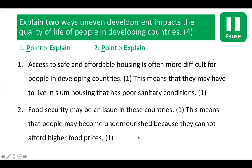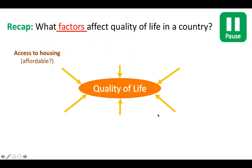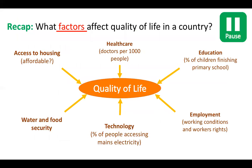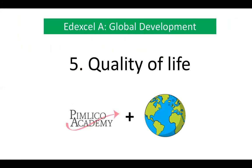For the second point, you could mention that food security may also be an issue in developing countries. This means that people may become undernourished because they cannot afford higher food prices. You could use any of the main factors to explain why people's quality of life has been affected. I hope you found this video helpful. Join me for the next lesson on types of aid and aid strategies.